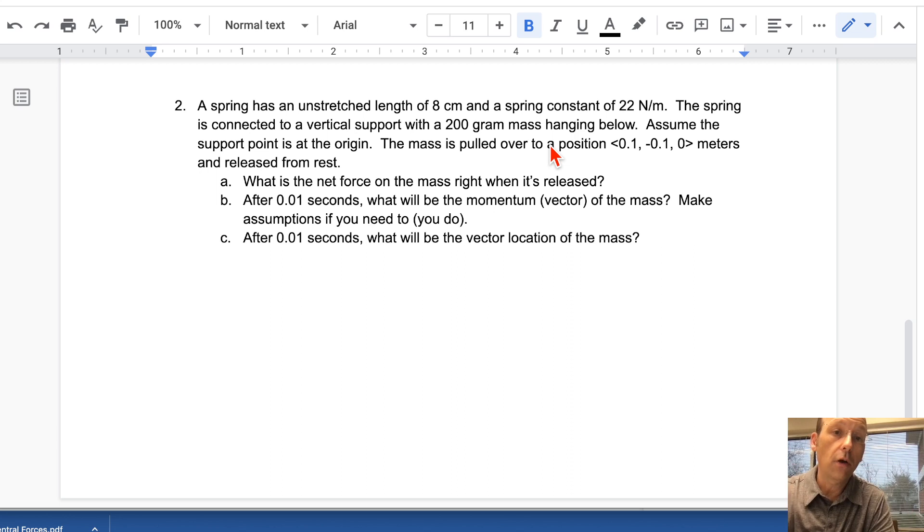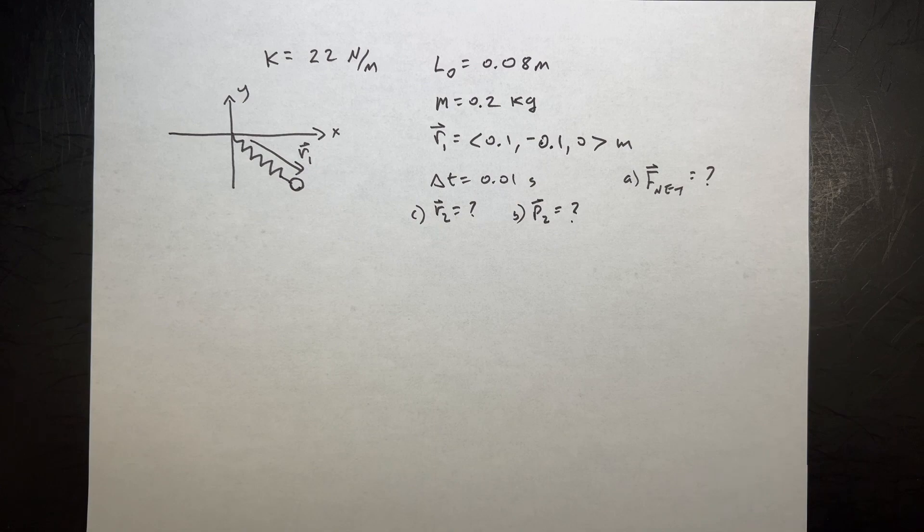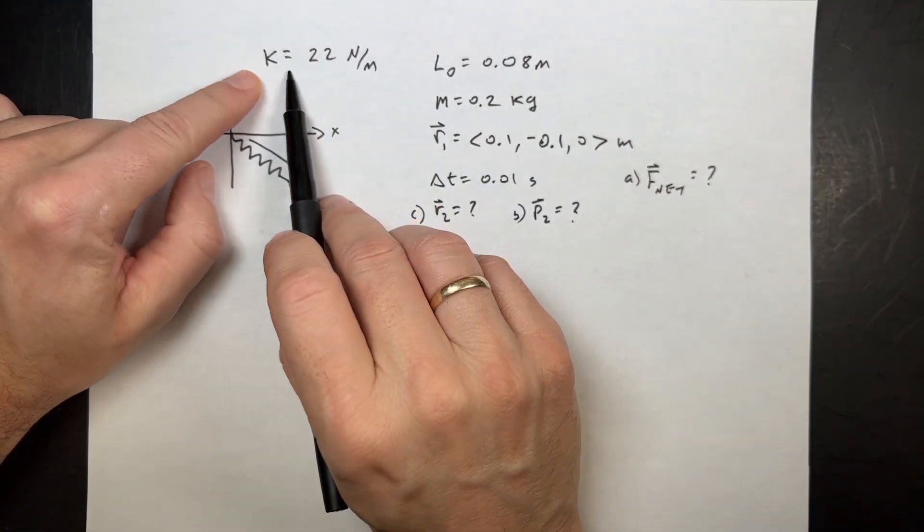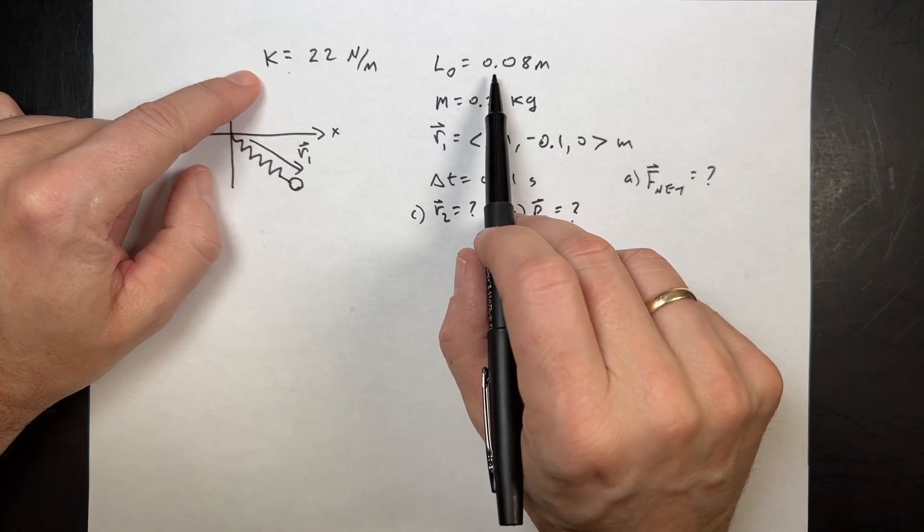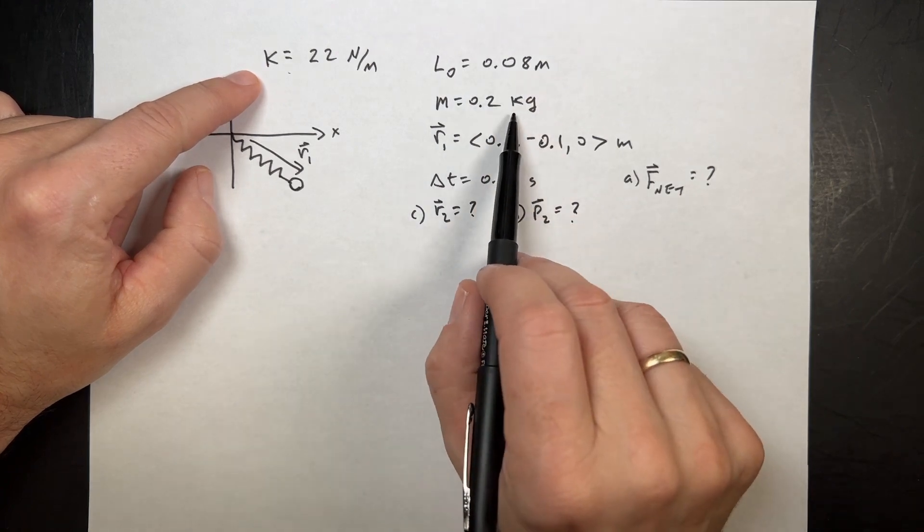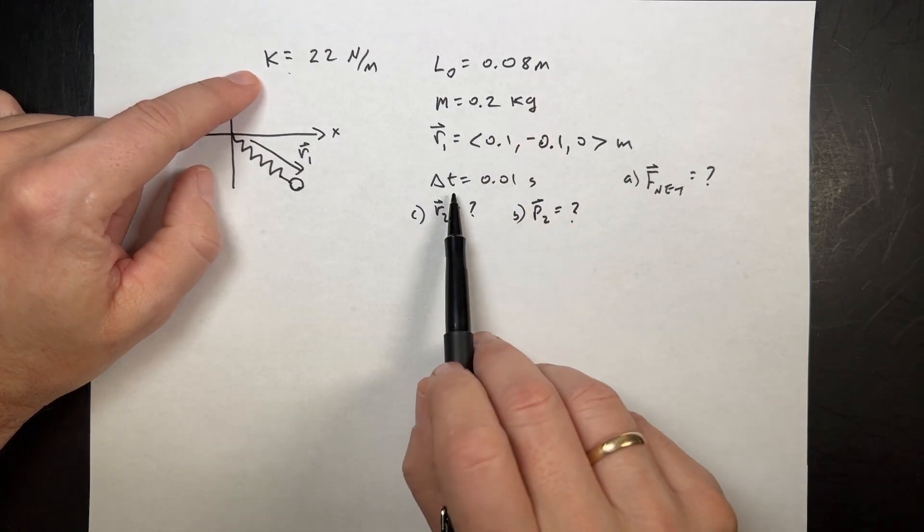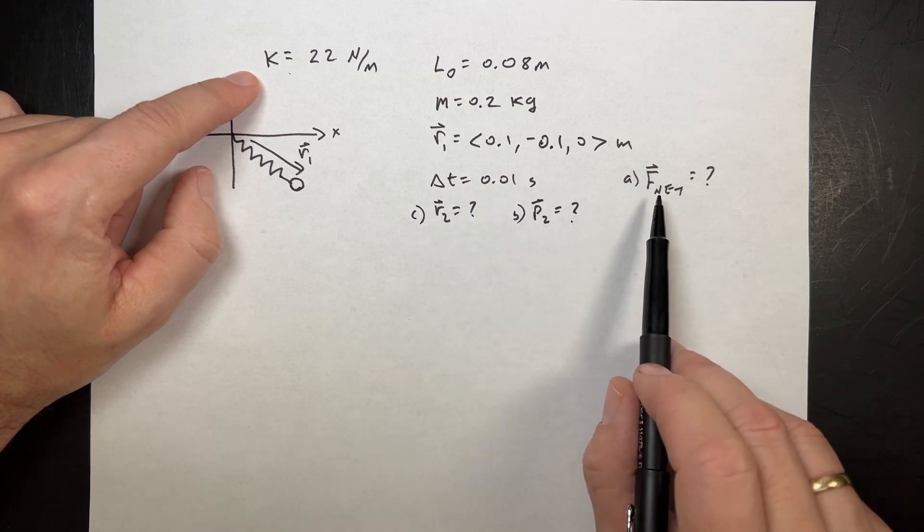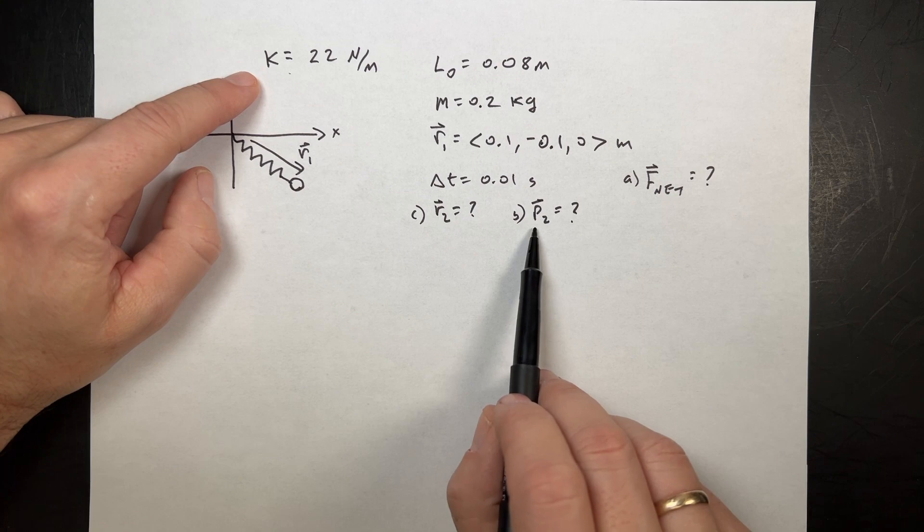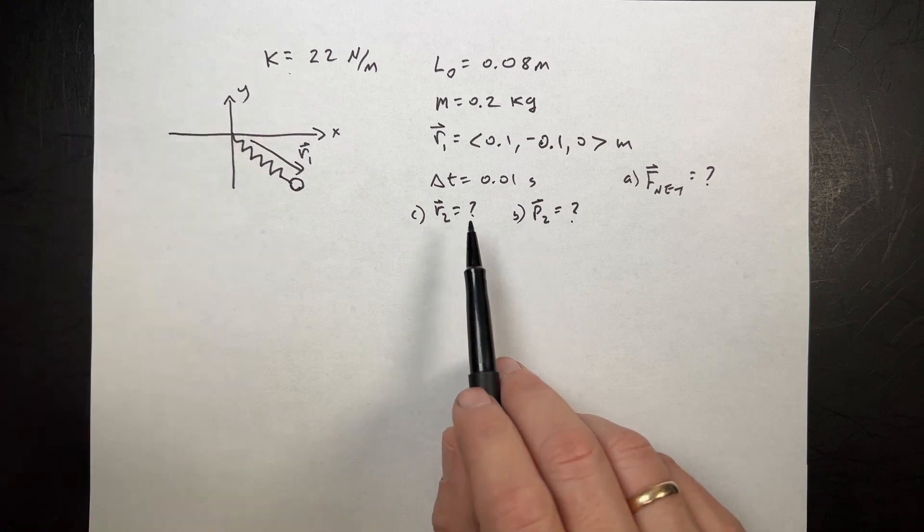What's the net force? What's the momentum after 0.01 seconds? And what's the position after 0.01 seconds? Let's get to this. So spring constant K equals 22 newtons per meter. The unstretched length L0 is 0.08 meters. The initial position, and then the delta time is 0.01 seconds. So find the net force, find the momentum after 0.01 seconds, and the position.